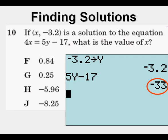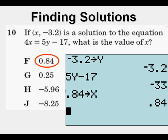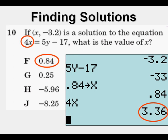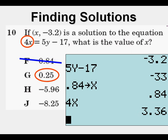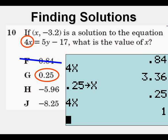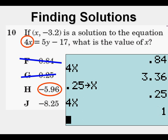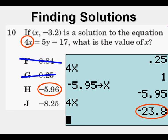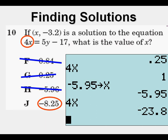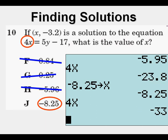We need to find x such that 4x = -33. We start with choice F: store 0.84 to x, enter 4x, and get 3.36 — not -33, so cross it out. Same process for choice G: store 0.25, enter 4x, get 1 — incorrect. Choice H: store -5.96, enter 4x, get -23.8 — not it. By process of elimination, J is the right answer. We confirm: entering J gives us -33, so J is definitively correct.